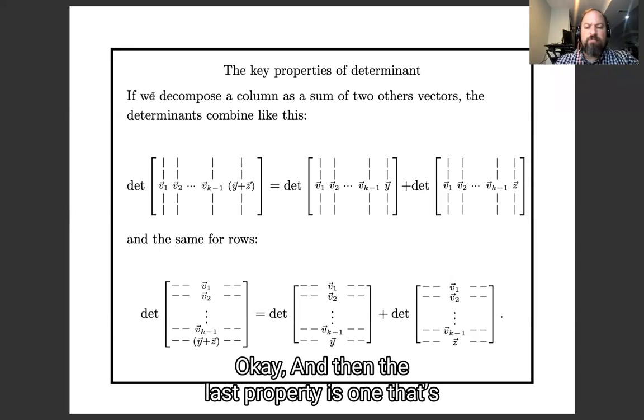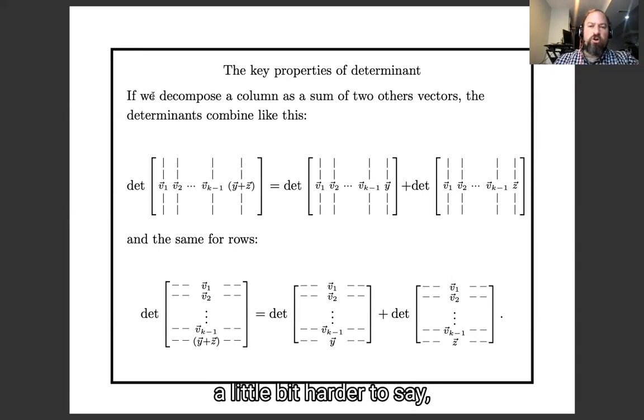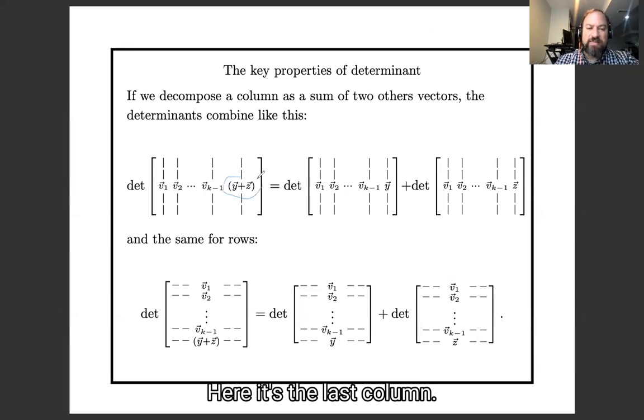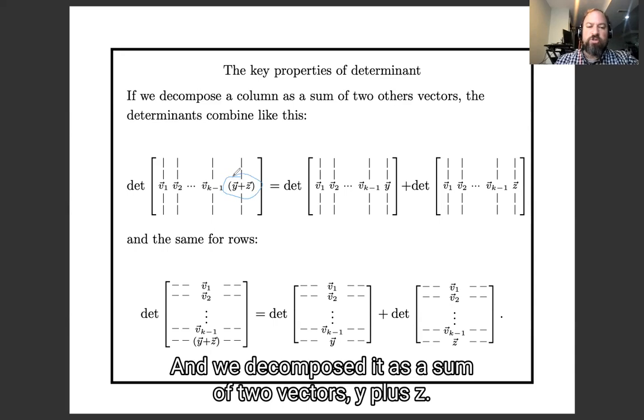Okay, and then the last property is one that's a little bit harder to say, but is very important. If we take one row or one column, here it's the last column, and we decompose it as a sum of two vectors, y plus z, then we can make two new determinants.